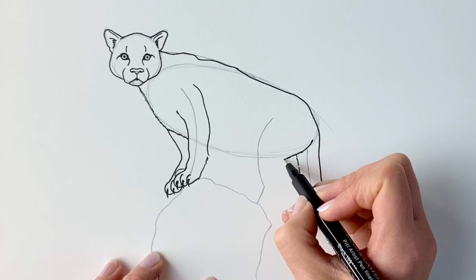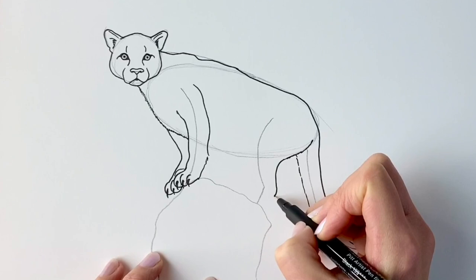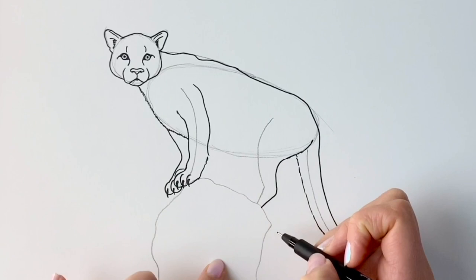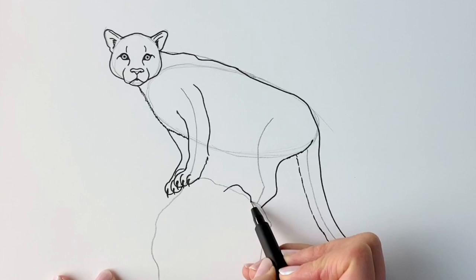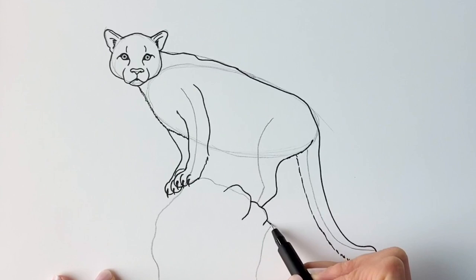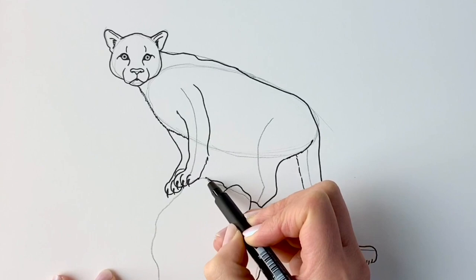So we're then going to finish off this tree stump thing that I was drawing before. I'm going to draw the tree stump because it's actually covering the rest of the back foot. So there we go. There we go. Just gives it a little bit of context, so it's kind of crouching on this tree stump. There we go. Excellent.